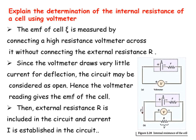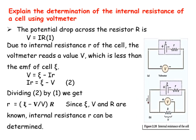See the next diagram. The external resistance R is now included in the circuit and a current IE is established in the circuit. The voltmeter is connected in parallel with the resistor R. The potential drop across the resistor R is the potential difference V, which equals IR.